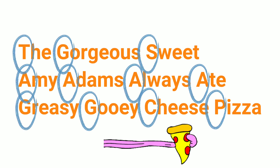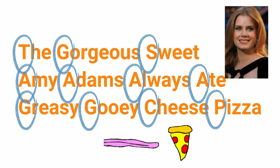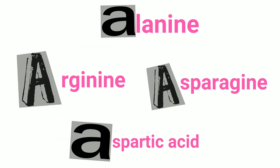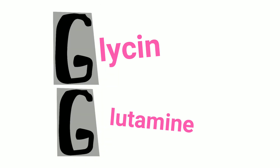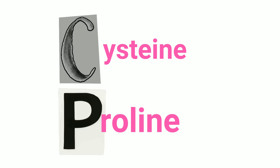Now let's use a mnemonic to remember this classification: The gorgeous, sweet Amy Adams always ate greasy, gooey cheese pizza. Where TGS is tyrosine, glutamic acid, and serine. The four A's: alanine, arginine, asparagine, and aspartic acid. G and G is glycine and glutamine. And C-P is cysteine and proline.